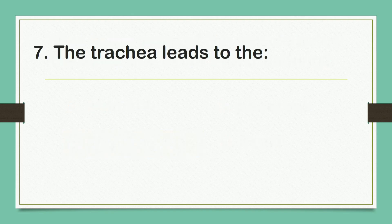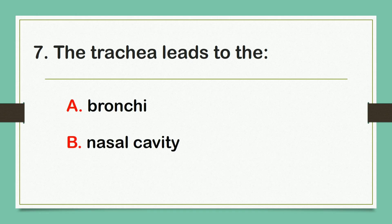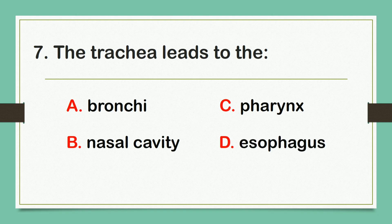The trachea leads to — Letter A. Bronchi. B. Nasal cavity. C. Pharynx. Or D. Esophagus. The correct answer is letter A: Bronchi.